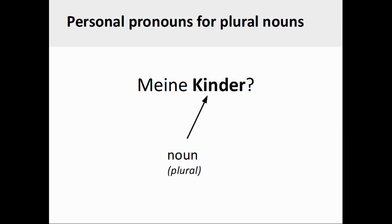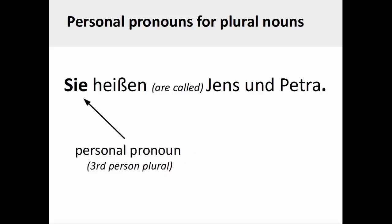For a plural noun, the matching personal pronoun needs to be used: sie (third person plural). This concludes the presentation on German personal pronouns in the nominative case. Be sure to test your knowledge by completing the related online course activity.